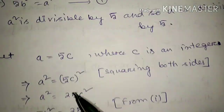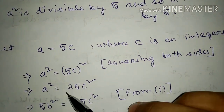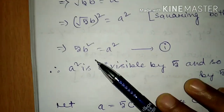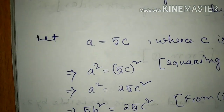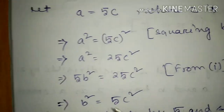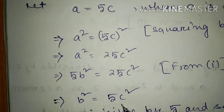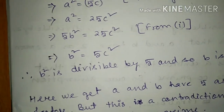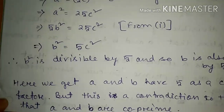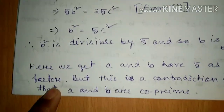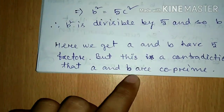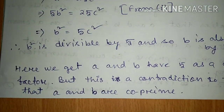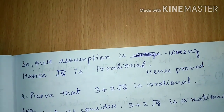Squaring A equals 5C: A squared equals 25C squared. Substituting from equation 1 — where A squared equals 5B squared — we get 5B squared equals 25C squared. Cancelling 5 from both sides: B squared equals 5C squared. So B squared is divisible by 5, and therefore B is also divisible by 5. Hence A and B both have 5 as a common factor. But this contradicts the fact that A and B are co-prime. So our assumption is wrong — hence root 5 is irrational.